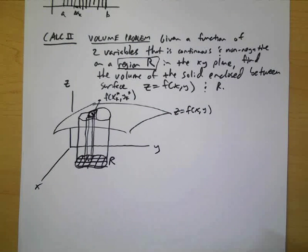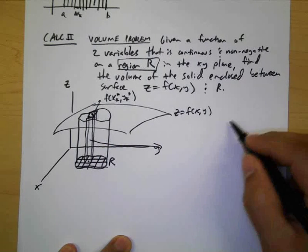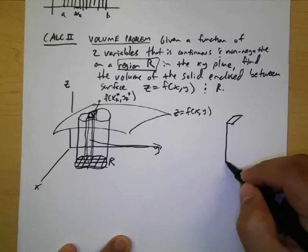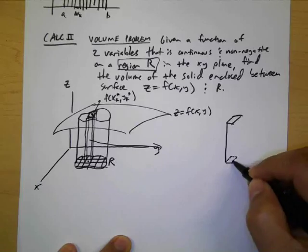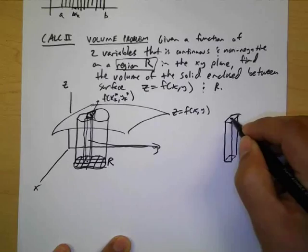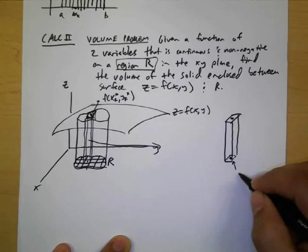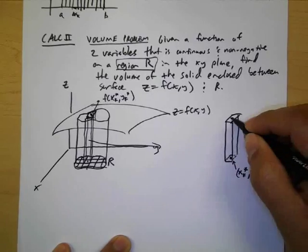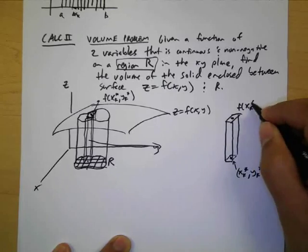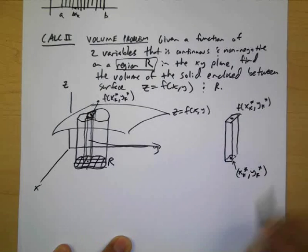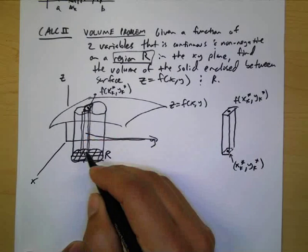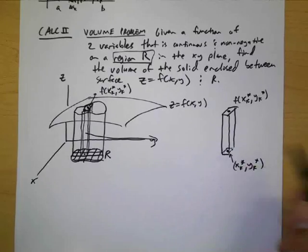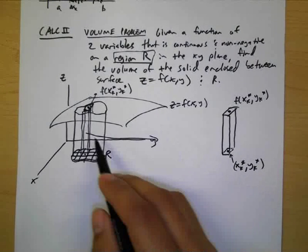So what I'll do is redraw this section make it a little easier. Okay so this represents x sub k star y sub k star and then that corresponds to a height f of x sub k star y sub k star. Okay so that's what this looks like, sorry about the mess but I think this is a better picture.